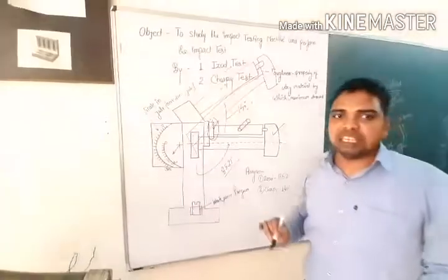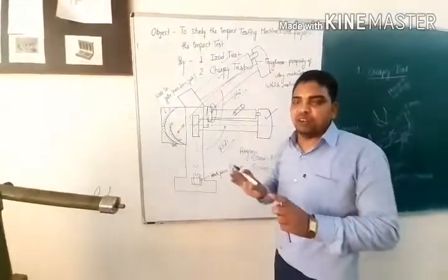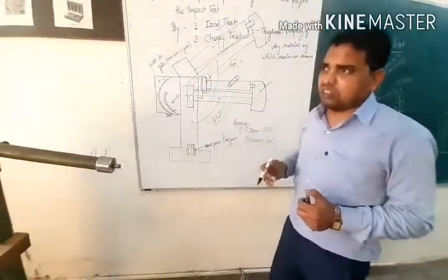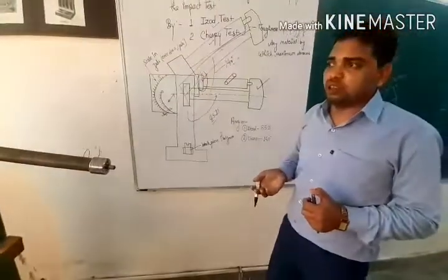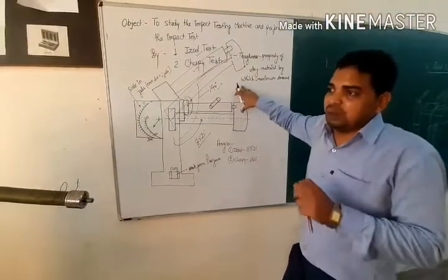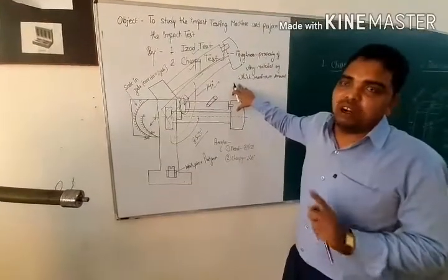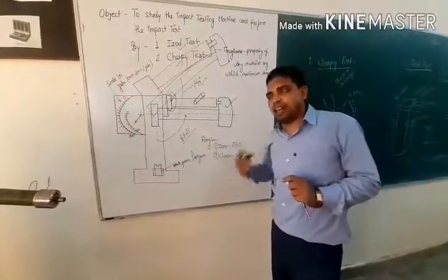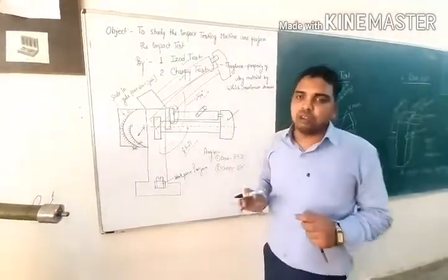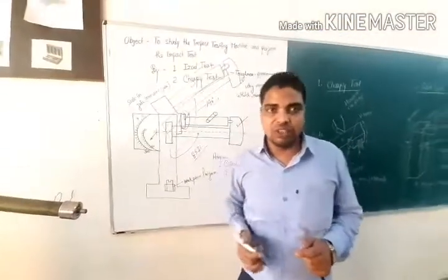This is destructive testing. There are two types of testing: non-destructive and destructive. In non-destructive testing, we don't break the material — we use X-rays, gamma rays, and other technologies to find cracks. But for mechanical properties like toughness, we generally perform destructive testing where we apply force until the specimen breaks, allowing us to find the required values. Please watch the next video. Thank you.